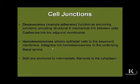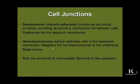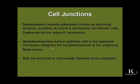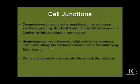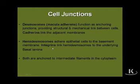Desmosomes, also known as spot junctions or macula adherens, help maintain the structural integrity of an epithelium by providing a mechanical link between the cells. Cadherins link the adjacent membranes, and the cytoskeletal element closely associated with a desmosome is keratin intermediate filaments in the adjacent cytoplasm. Hemidesmosomes link epithelial cells to the underlying basement membrane, but instead of utilizing cadherins, they utilize integrins that link hemidesmosomes to the underlying components of the basement membrane.